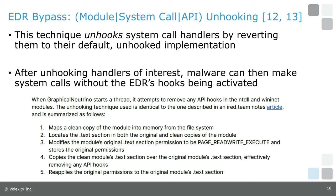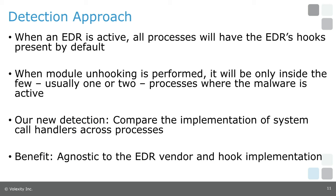You go from a state where every process has system calls hooked to a state where the malicious code — running in its own process or injected into a victim process — has those system call handlers reverted to the disk version, while all other processes retain the hooked form. Instead of trying to enumerate 50 different variations of module unhooking, we realized we could use data in memory directly. Our new Volatility plugin enumerates every process, reads the bytes of the system call handlers that malware often targets, and compares implementations. Out of 100 processes, 99 have one implementation and one outlier process has a different one — that outlier is where malware has unhooked.